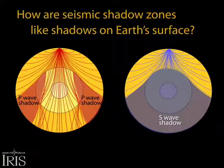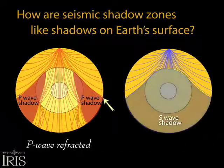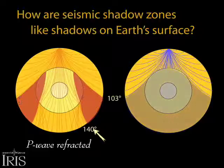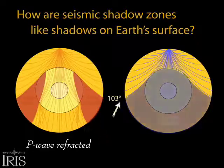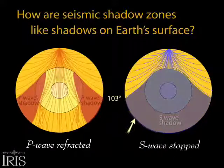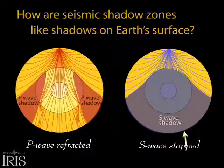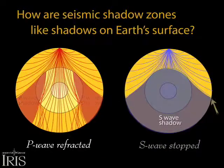A seismic shadow zone is an area that does not receive direct body waves. The P wave shadow extends from angular distances of about 103 to 140 degrees from an earthquake due to refraction at the core-mantle boundary. The S wave shadow, which results from S waves being stopped entirely by the liquid core, extends from 103 degrees.